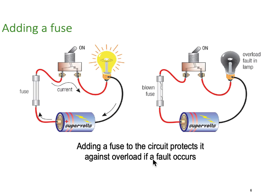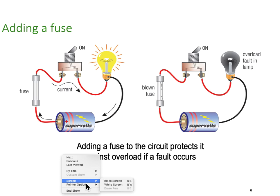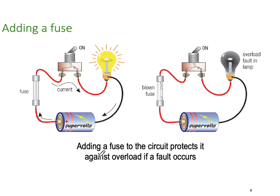Now we're adding a fuse. By adding a fuse to the circuit it protects it against overload or over-current. The fuse is an intentional weak link — as long as we don't exceed the amount of current that the fuse is designed for, the lamp and circuit will operate. But if something happens — maybe we get a short circuit of some kind inside our lamp and we're no longer going through all of the lamp's element.